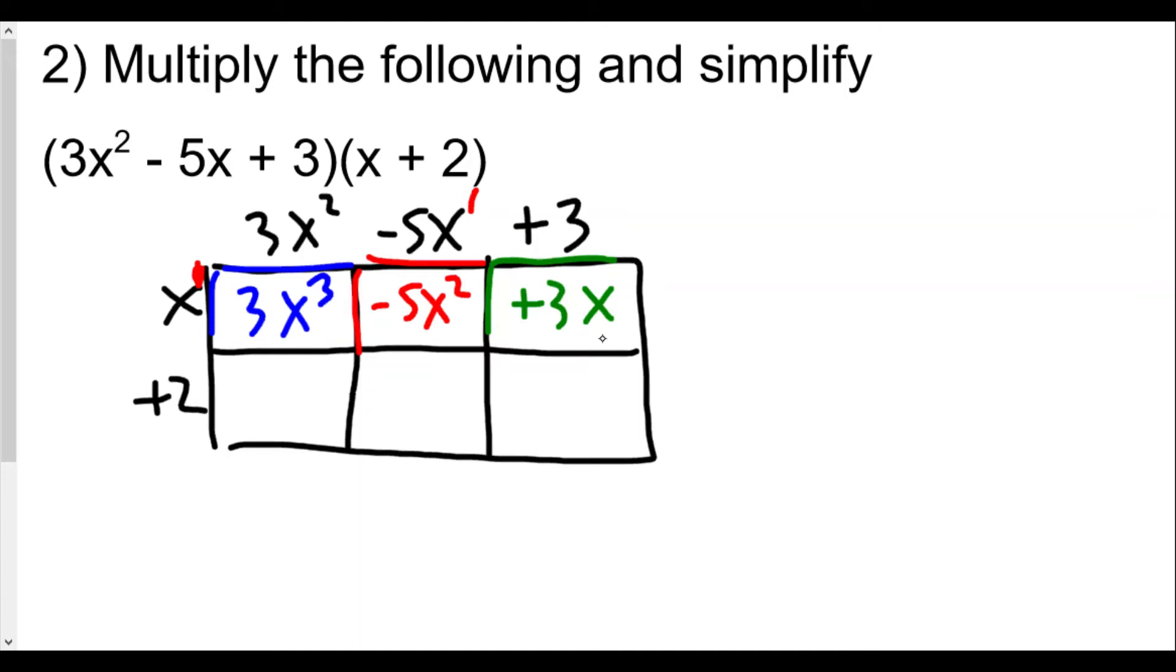We continue on with the second level here by multiplying 2 times 3x² to get 6x². Now multiply 2 times the -5x to give us -10x, and then finally 3 times 2, which is +6. So you multiplied each of these terms. If you use distributive property, which I'll show as well, it's the same thing.